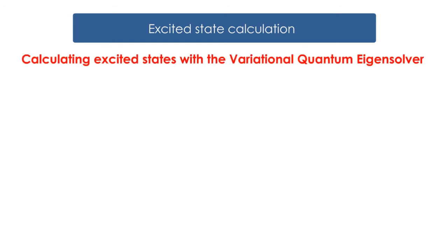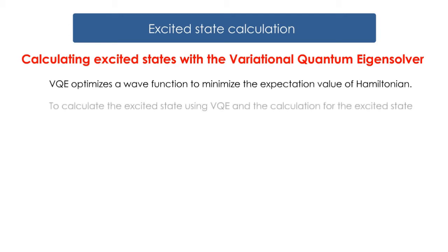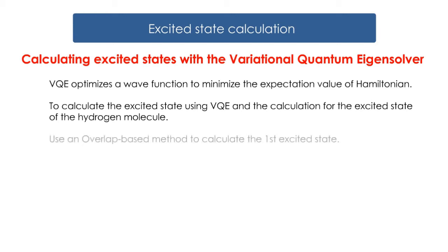Now let's learn about calculating excited states with the Variational Quantum Eigensolver. VQE optimizes a wave function to minimize the expectation value of Hamiltonian. Therefore VQE can only calculate the ground state. In this time we will explain how to calculate the excited state using VQE and we will show the example of the calculation for the excited state of the hydrogen molecule. This time we will use an overlap-based method to calculate the first excited state.